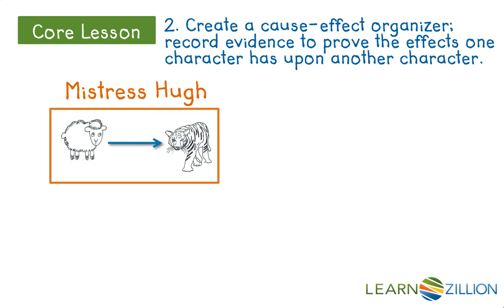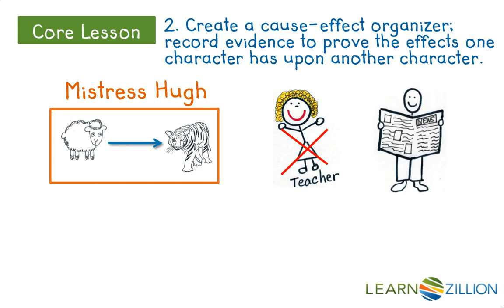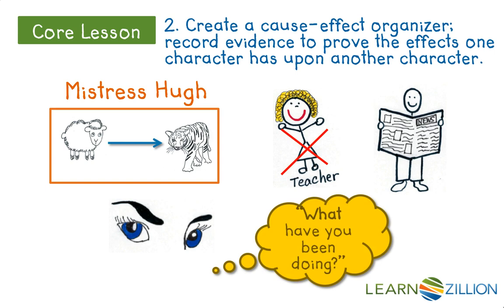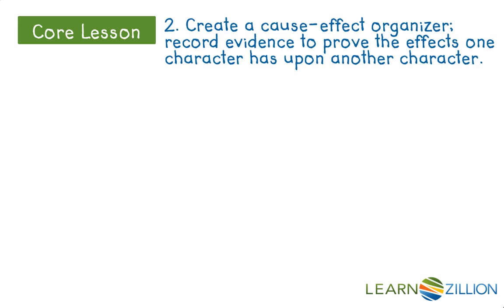We're looking for evidence to prove one character affects another character. The change in Mistress Hugh was described as her lamb-like disposition becoming tiger-like fierceness. We need to think about what we found: she had stopped being his teacher, she didn't like him having a newspaper, and she watched him constantly — always suspicious that he would have a book, and always asking what he had been doing.